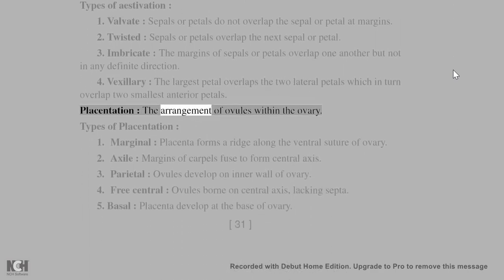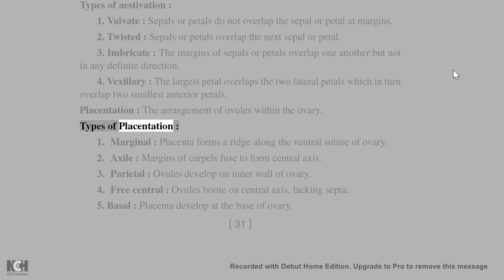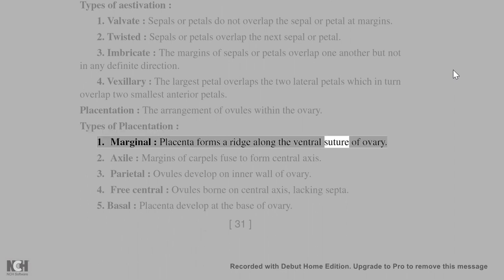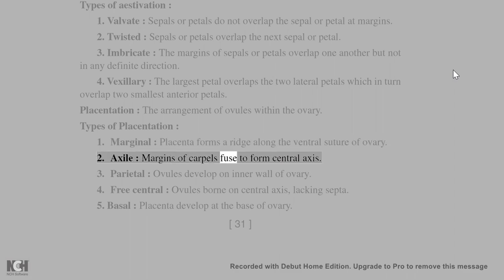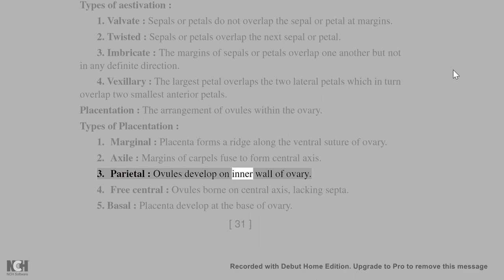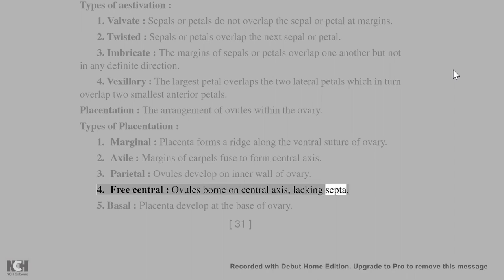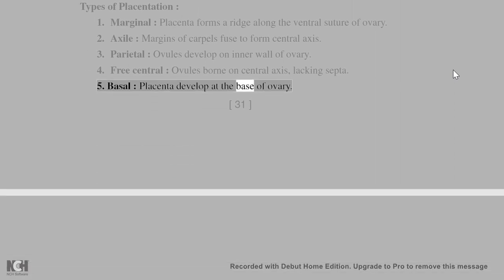Placentation is the arrangement of ovules within the ovary. Types: (1) Marginal — placenta forms a ridge along the ventral suture of the ovary. (2) Axile — margins of carpels fuse to form a central axis. (3) Parietal — ovules develop on inner wall of the ovary. (4) Free central — ovules borne on a central axis, lacking septa. (5) Basal — placenta develops at the base of the ovary.